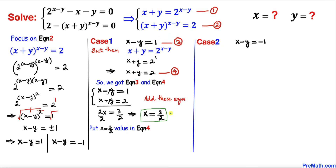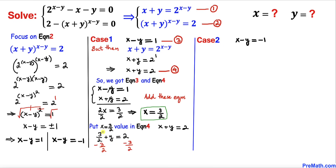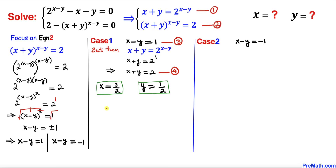Now we substitute x = 3/2 into equation four. Replacing x with 3/2 gives 3/2 + y = 2. Subtracting 3/2 from both sides, we get y = 2 − 3/2 = 1/2. So for case one, x = 3/2 and y = 1/2. The solution for case one is (3/2, 1/2).